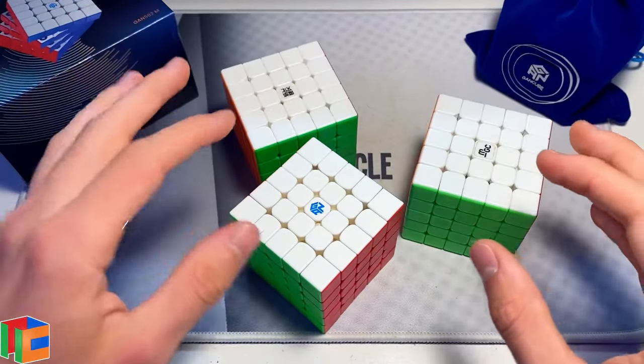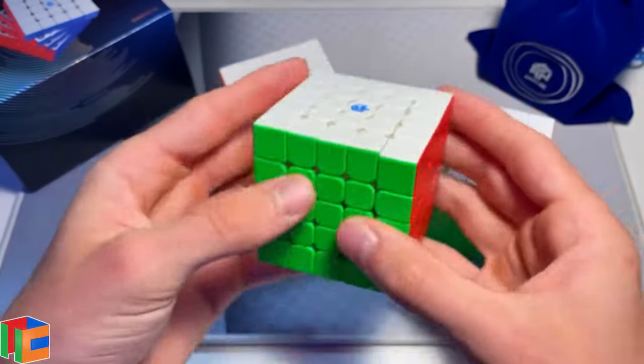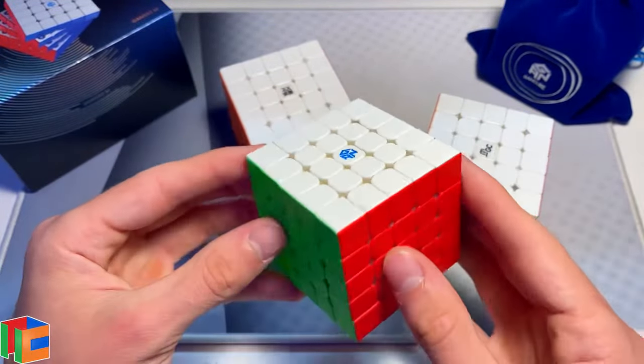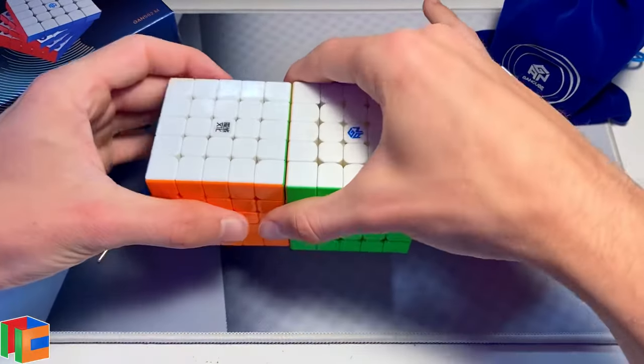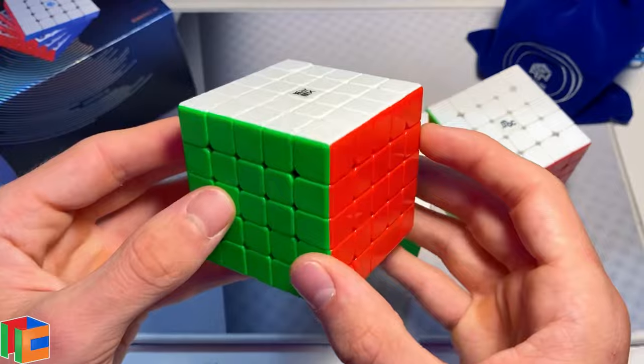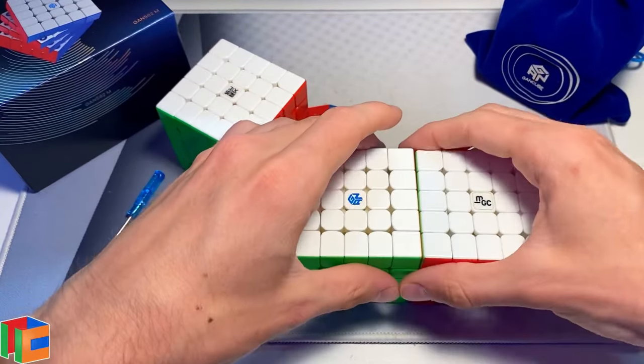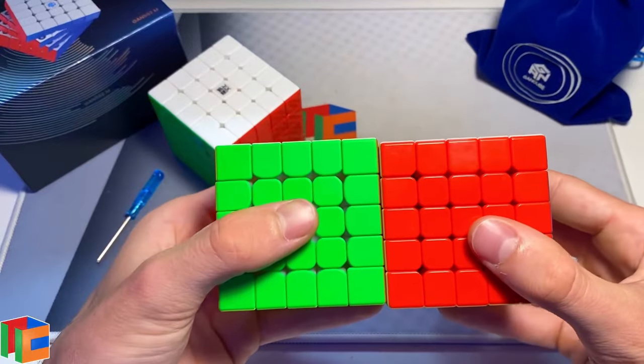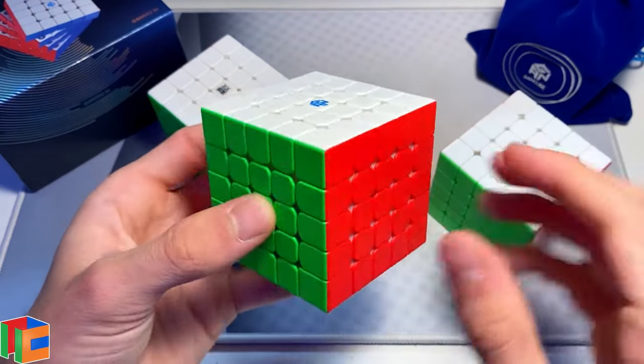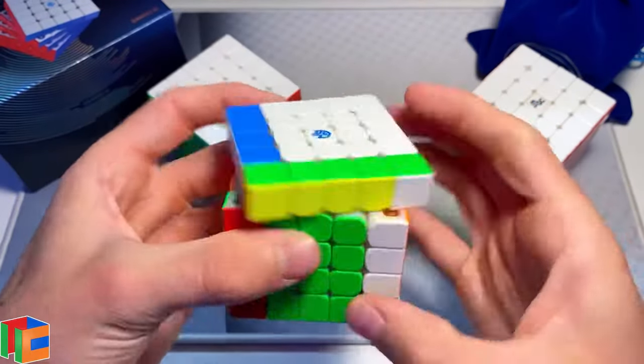The size did feel a little big whenever I first unboxed this. Maybe it's just because I haven't played with a 5x5 in such a long time, but it looks like it's a little bit bigger than the Aocheng WRM. Dang, I'm surprised I remember that name, I was about to call it the Waylon. And it also feels a little bit bigger than the MGC. Actually, I think these are the exact same size. I know this is 62 millimeters and I'm pretty sure that's what the MGC was also.